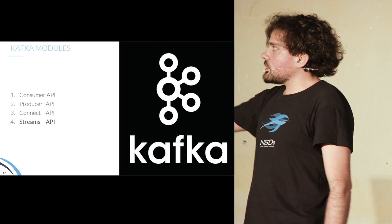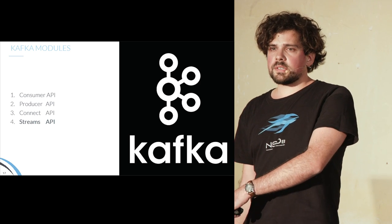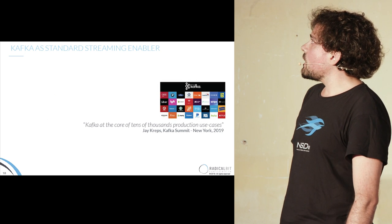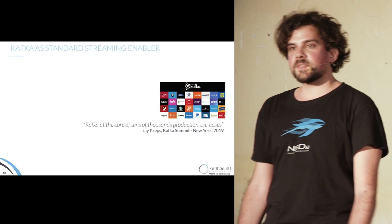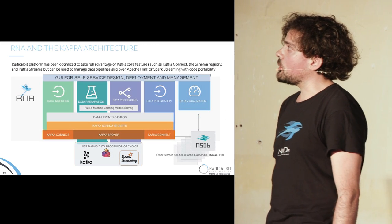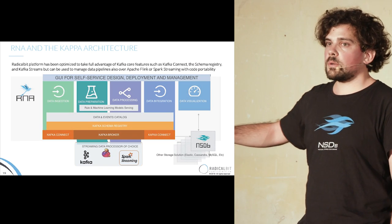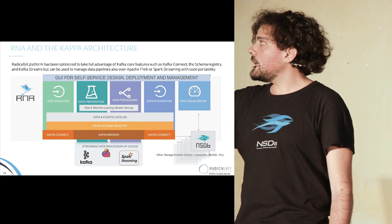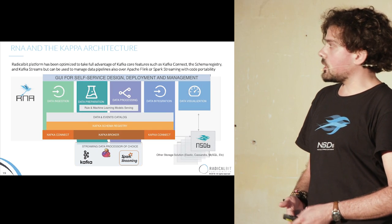Kafka is made up of different layers, and we are going to focus on Kafka Streams and the Streams API in this presentation. Kafka is now a sort of standard for streaming applications. What we do with our product at RadicalBit is use Kafka as our backbone: we collect data from external sources, process it using the Streams API, and integrate the outcomes toward external systems using the Connect APIs.